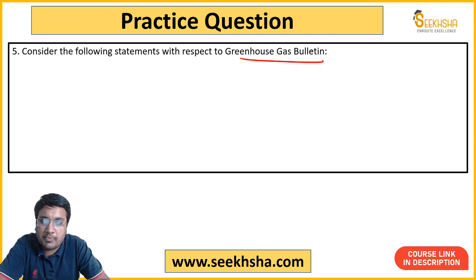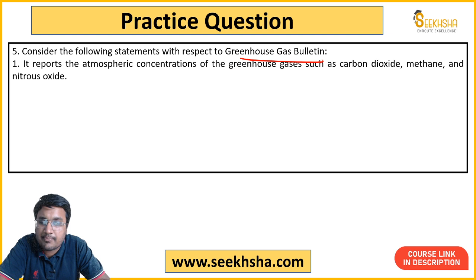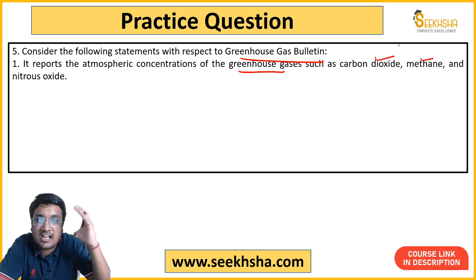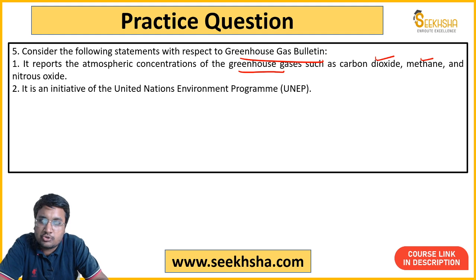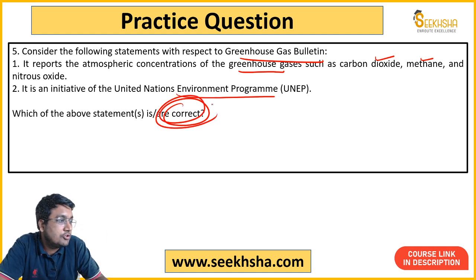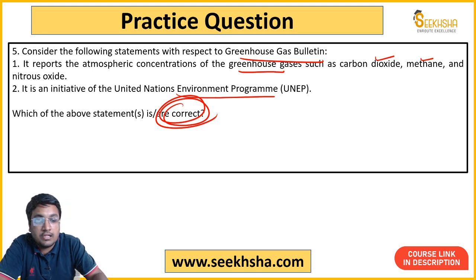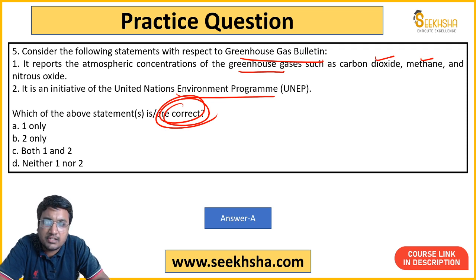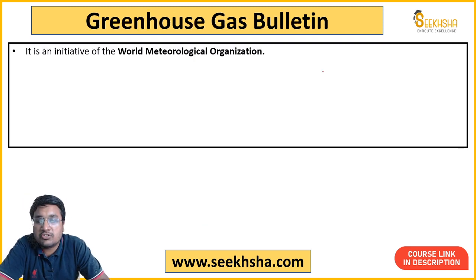Fifth question is about the Greenhouse Gas Bulletin. Statement 1 says it is a report that tracks the concentration of greenhouse gases like carbon dioxide, methane, and nitrous oxide in the atmosphere. Statement 2 says it is a United Nations Environment Programme initiative. You must identify which statement is correct. The options are: A — one only, B — two only, C — both, D — neither. The answer is A — one only is correct. Statement 2 is wrong because it is not UNEP; it is the World Meteorological Organization that publishes this bulletin.